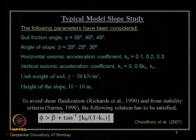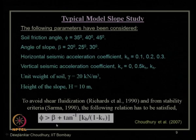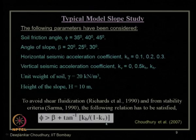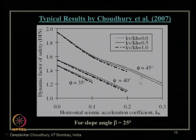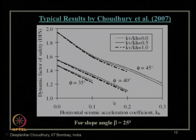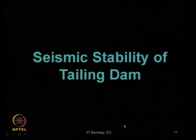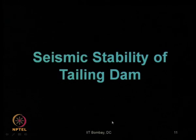If it is a sloping ground, the slope angle also gets added, as proposed by Sharma in 1990. The equation for stability of a finite slope is that phi should be greater than beta plus tan inverse of k_h divided by (1 minus k_v). We also saw how the dynamic factor of safety varies with both horizontal and vertical seismic acceleration coefficients for different soil friction angles and a given slope angle.